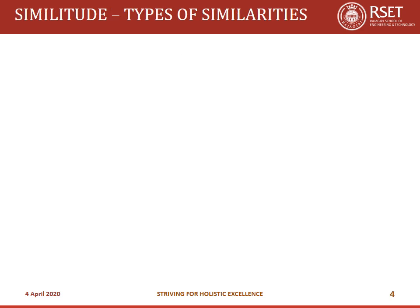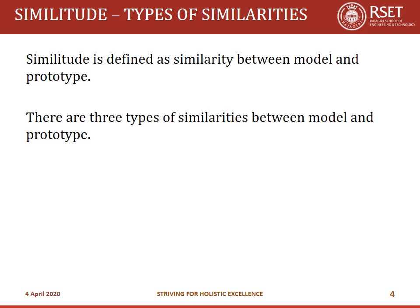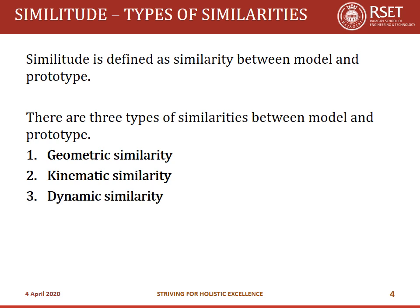Before studying model analysis we have to study about similitude, or the types of similarities that should exist between the model and the prototype. When building a model, the only consideration should not be geometry — it is not simply a scaled-down version. There are many other elements to consider. Similitude is defined as the similarity between the model and the prototype. There are three types: geometric similarity, kinematic similarity, and dynamic similarity.